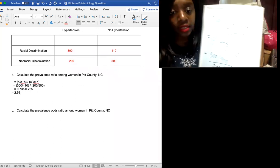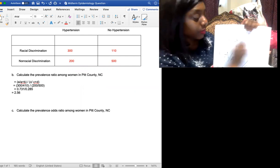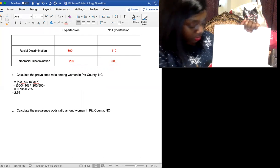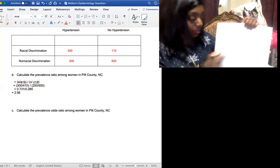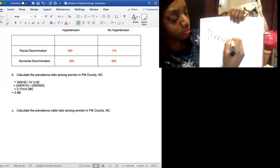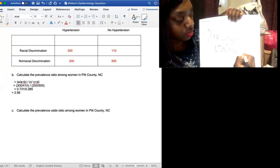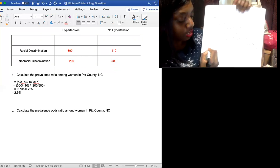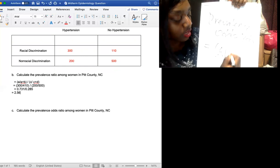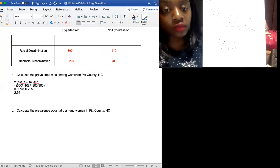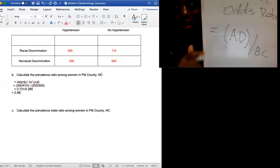The last question asks us, calculate the prevalence odds ratio among women in Pitt County, North Carolina. So erase this board, we will start again. So we have prevalence odds ratio. And that equation is the cross products from the two by two table that we discussed. So we want to know which one is our a. So in this table, our a would be 300.